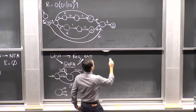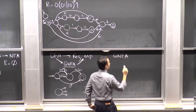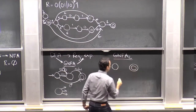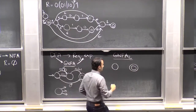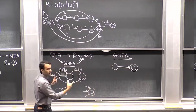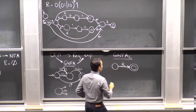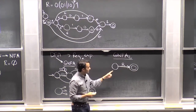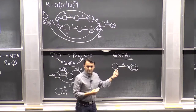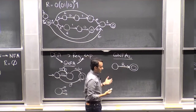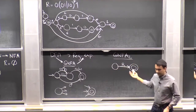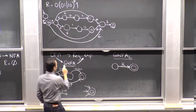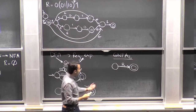If I give you a GNFA with only two states — a start state and an accept state — with one arrow having some regular expression R, what language does this express? It expresses exactly the regular language described by R. So if you have a GNFA with just two states, the regular expression for the language it accepts is just R — your job is done.